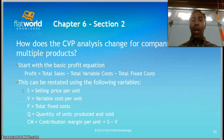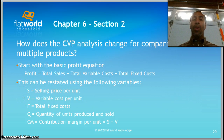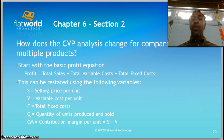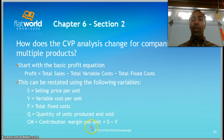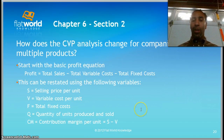This can be stated using the following variables — our legend to help you through. S is selling price per unit, V is variable cost per unit, F is total fixed cost, Q is quantity of units produced and sold, and CM is the contribution margin per unit, which is the selling price minus the variable cost.